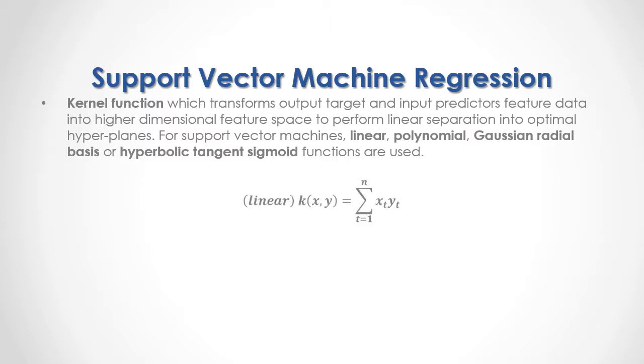As a formula, here we have the example of a linear kernel, which is equal to the sum from the first to the last of input predictor's data multiplied by output target feature data.